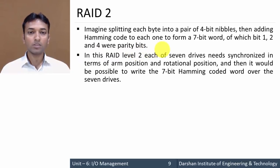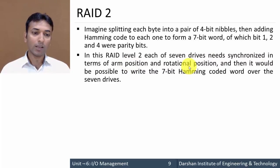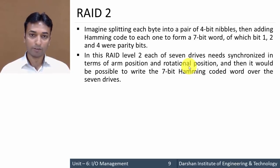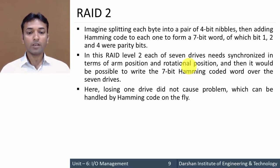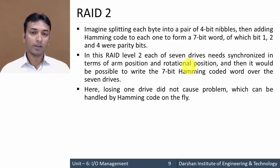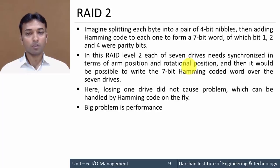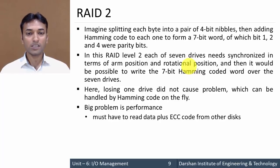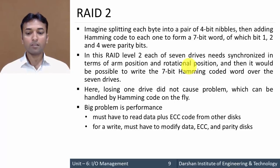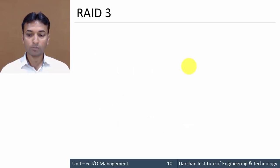In RAID level 2, each of the 7 drives needs to be synchronized in terms of arm position and rotation position, making it possible to write the 7-bit Hamming coded word over all 7 drives. Losing one drive does not cause a problem, as it can be handled by the Hamming code on the fly. The big problem is performance — for a read, you must read data plus ECC code from other disks; for a write, you must modify data as well as the ECC and parity disk, requiring more time.